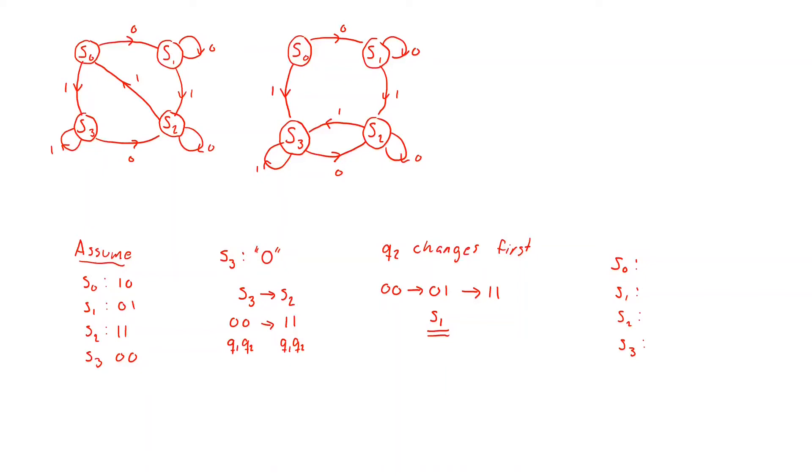So one such state assignment could be to have S0 as 0 0, S1 as 0 1, S2 as 1 1 and S3 as 1 0. That would mean that if we look at our state transition graph every time we make a state transition we will only change either the Q1 variable or the Q2 variable but never both at the same time.